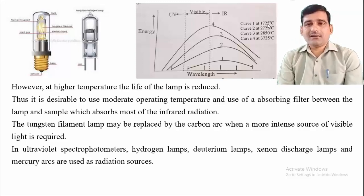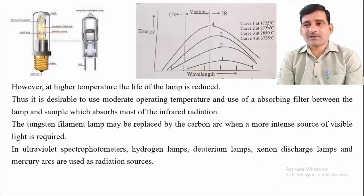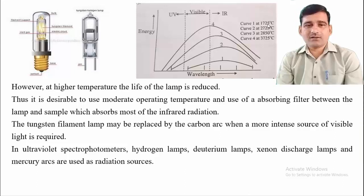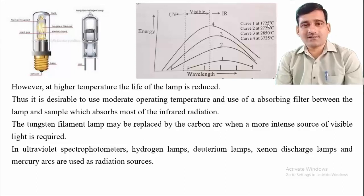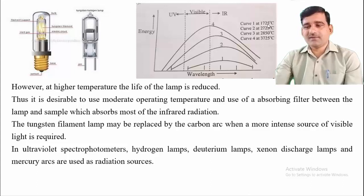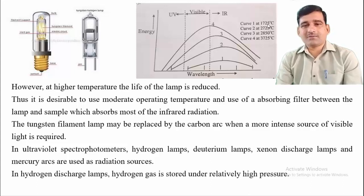In ultraviolet spectrophotometry, hydrogen lamp, deuterium lamp, xenon discharge lamp, or mercury arc lamps are used as radiation sources. This is because tungsten filament and carbon arc lamps provide light only in the visible and near-IR region. If radiation in the ultraviolet region is required, we use hydrogen, deuterium, xenon discharge, or mercury arc lamps.